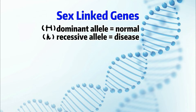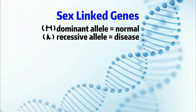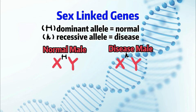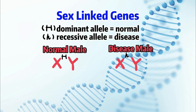By now you should know that males have XY chromosomes. Since the X chromosome can carry the sex-linked gene, this gives males two different combinations of sex-linked inheritance: the normal male and the male with disease. For a normal male, its X chromosome carries the dominant allele, while for the male with disease, its X chromosome carries the recessive allele.